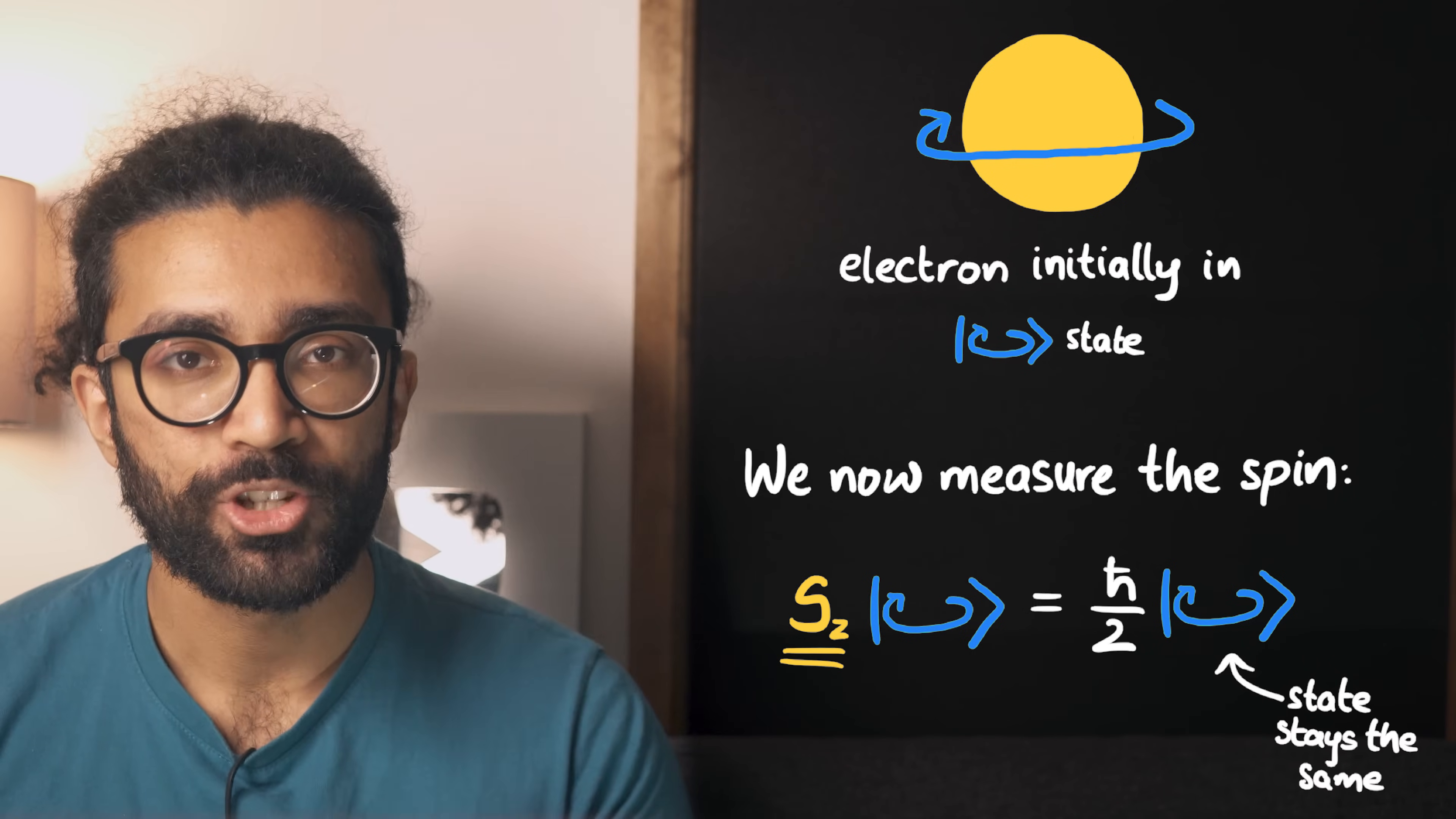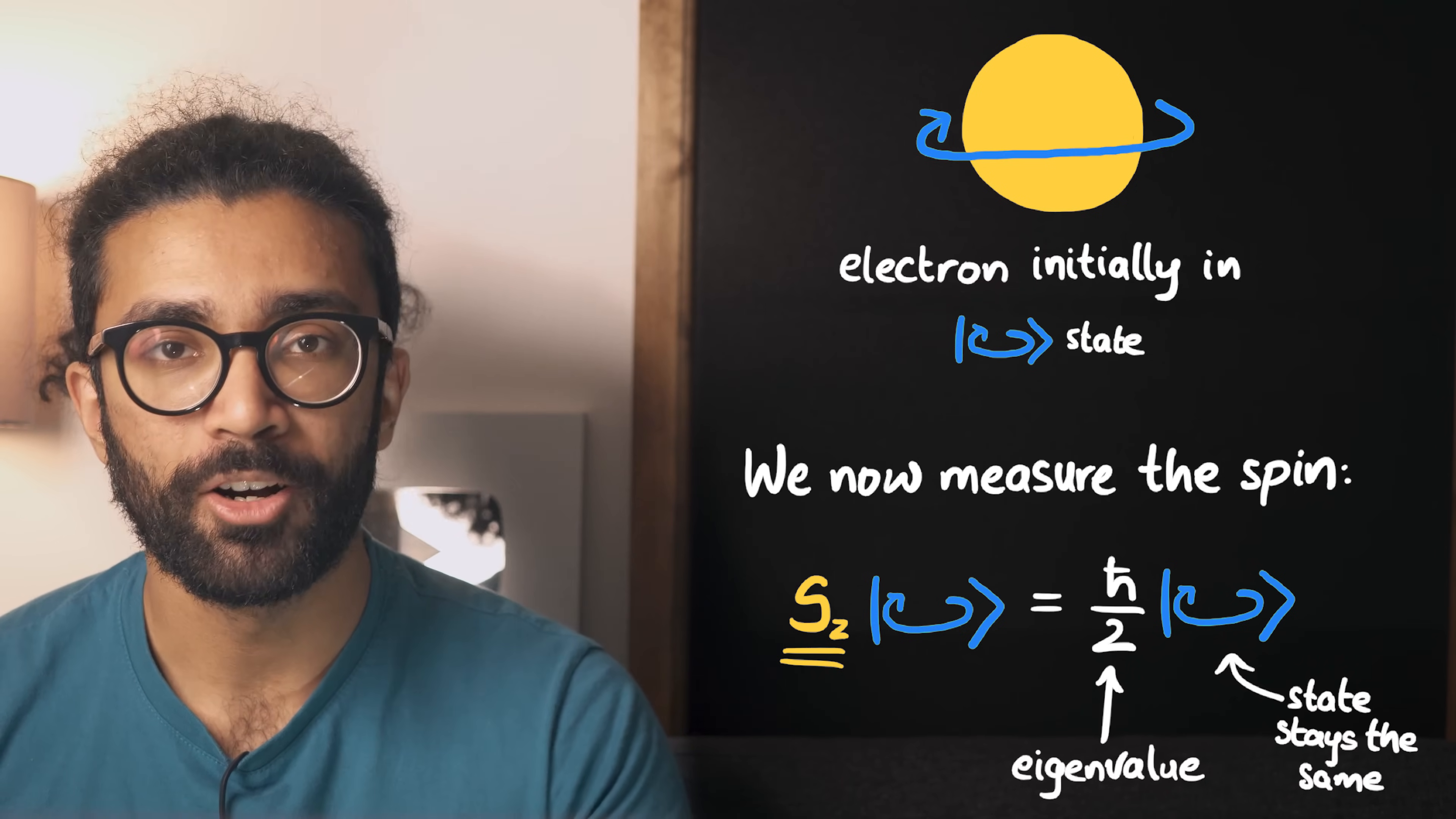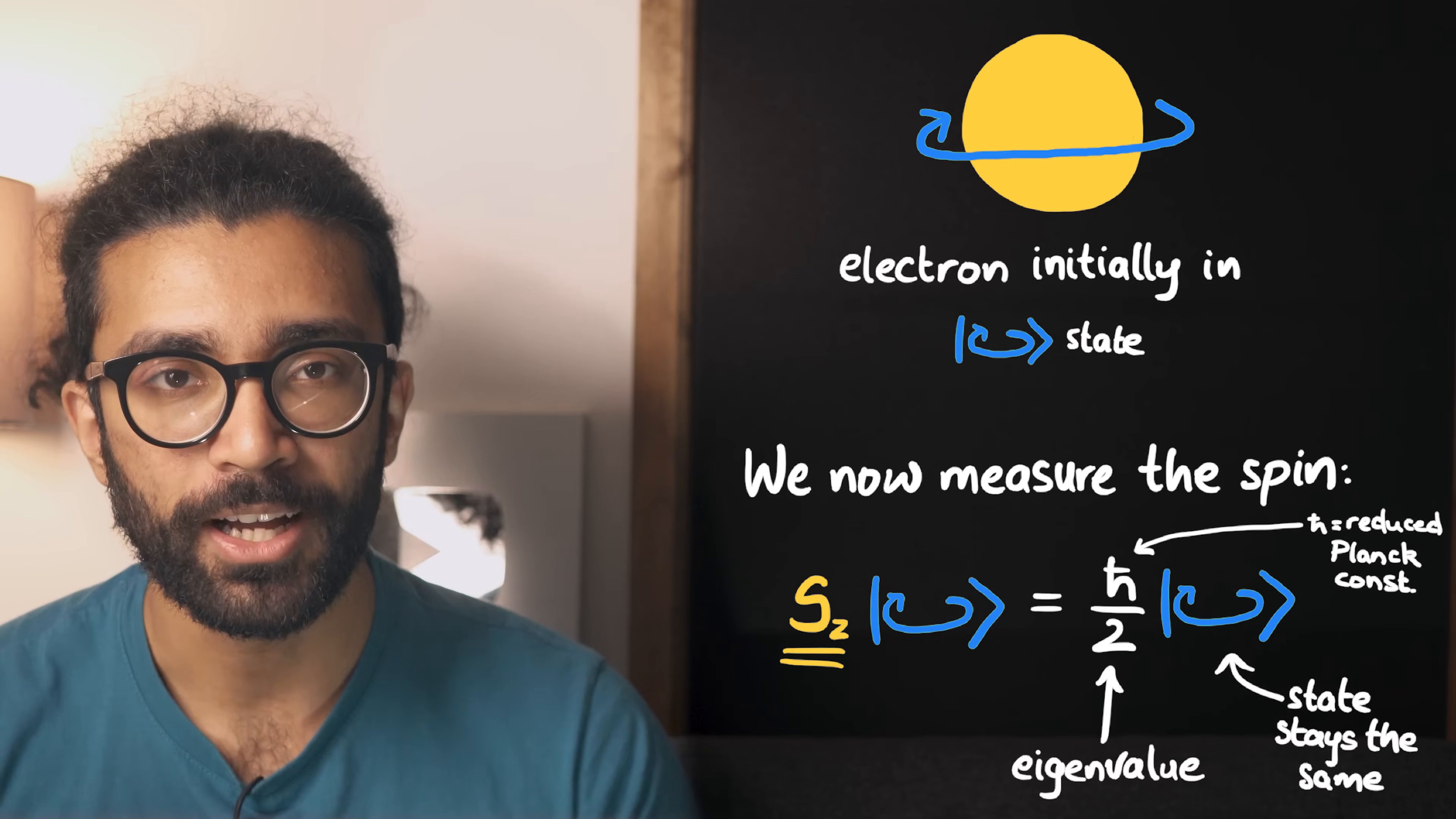And what we end up actually measuring when we make the measurement is the eigenvalue. In this case, our measurement result would be an angular momentum of h-bar over two, where h-bar is just a constant known as the reduced Planck constant. In other words, this is the numerical value we find.